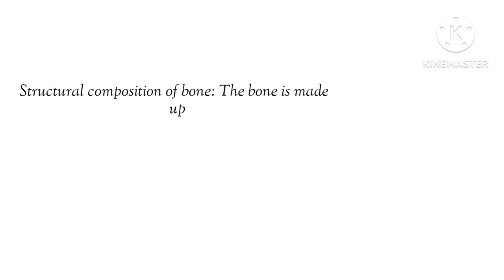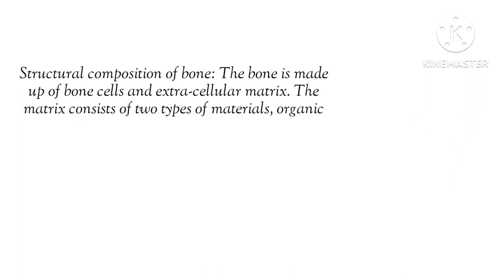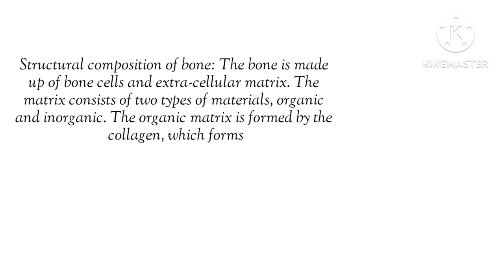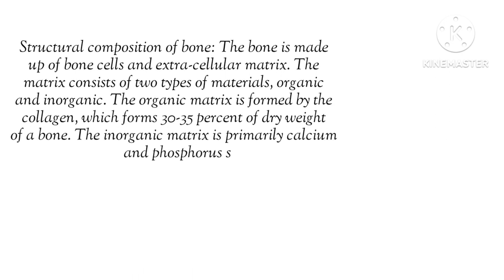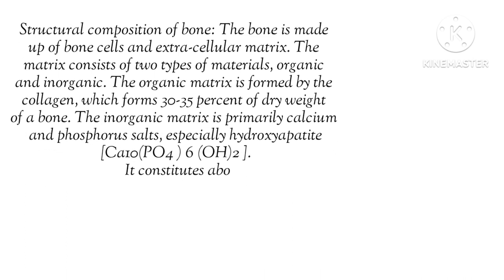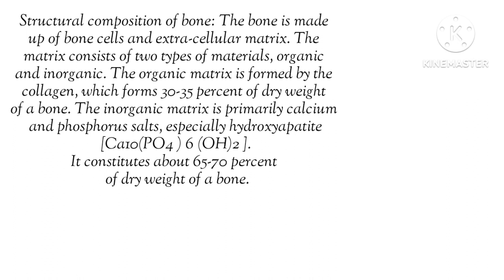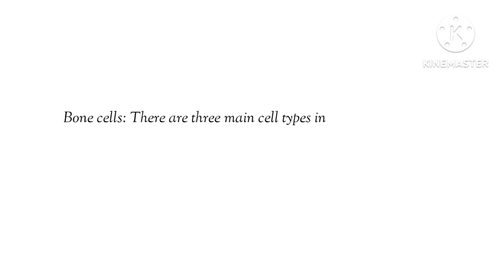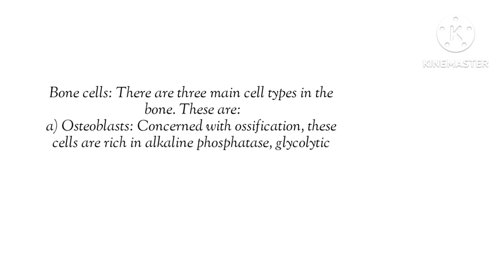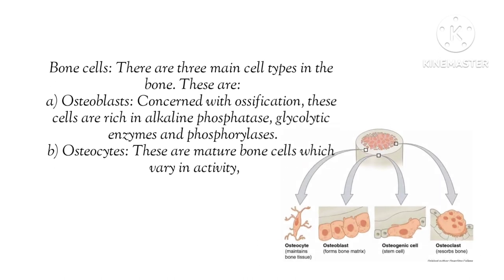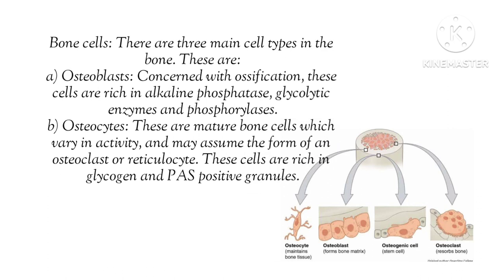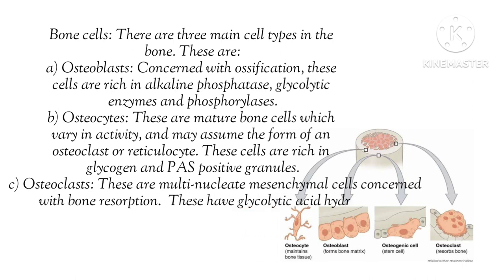The structural composition of bone consists of bone cells and an extracellular matrix. The extracellular matrix contains organic and inorganic materials. Organic material is mainly collagen, which makes up 30–35% of dry weight. The inorganic material — calcium, phosphorus, and salts in the form of hydroxyapatite — constitutes about 65–70% of the dry weight of bone.